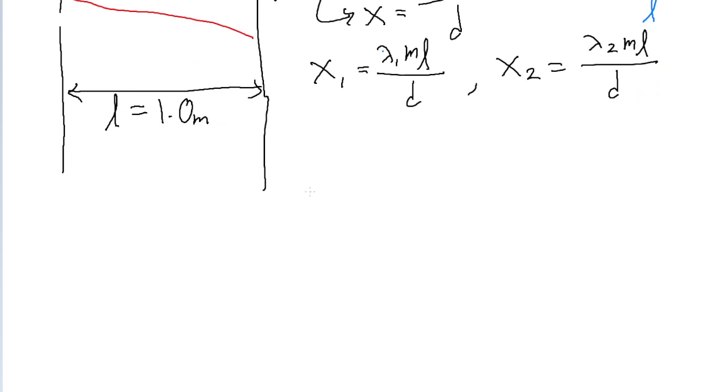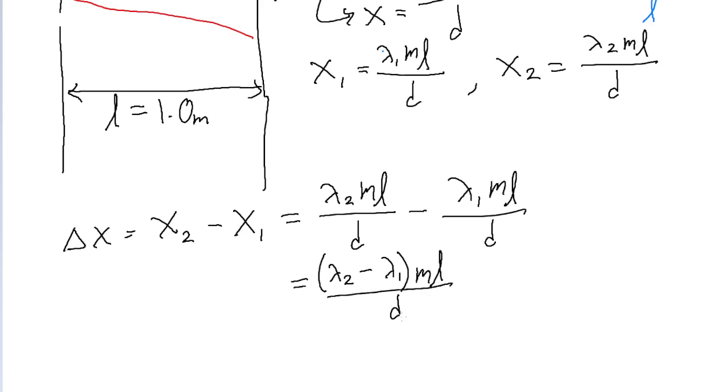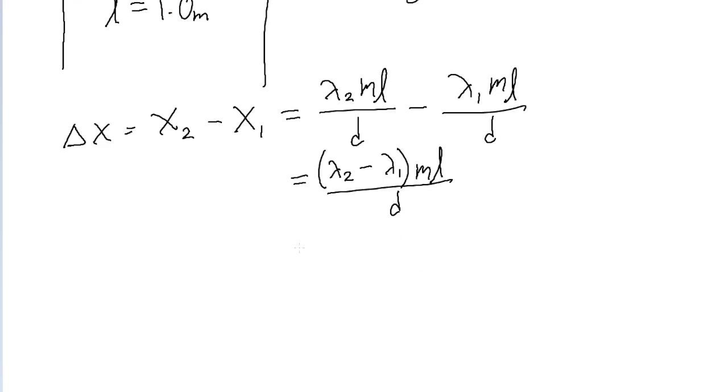Now that we have that sorted, we're looking for the distance between these x's. So we're looking for Δx or x₂ minus x₁. This is equal to λ₂mL divided by D minus λ₁mL divided by D. We can simplify this by factoring out everything except for the lambda values. So we can put in parentheses λ₂ minus λ₁, and just multiply by mL over D, because all those variables are not changing from one case to the other.